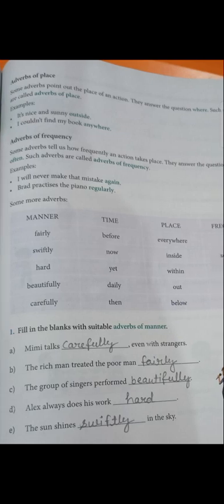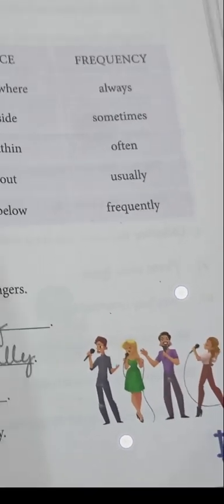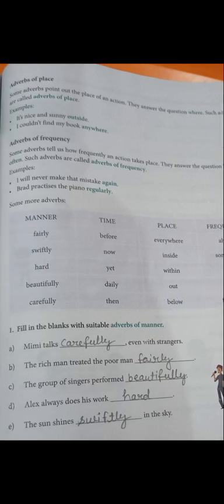Third: 'The group of singers performed ___.' Group of singers hain, to unhone kaisa perform kiya? Beautifully — bahut hi sundartha purvak. And: 'The sun shines ___ in the sky.' Answer: swiftly in the sky. Now turn over the page.